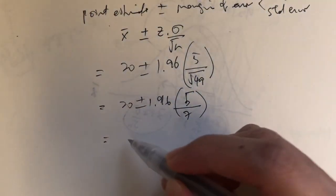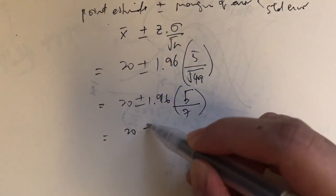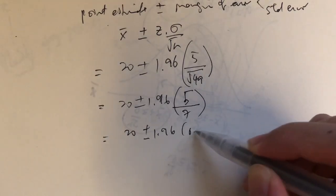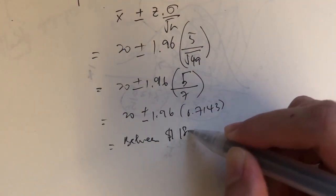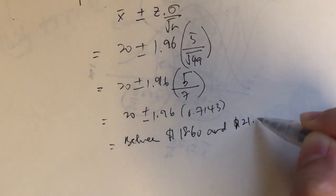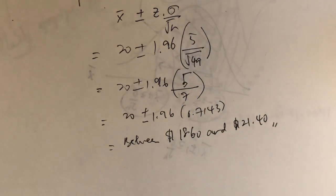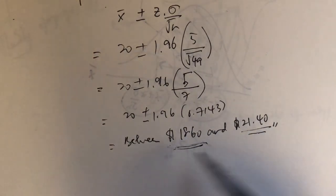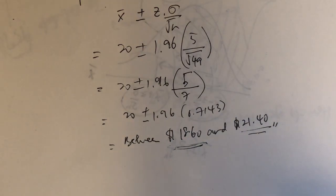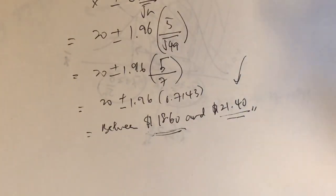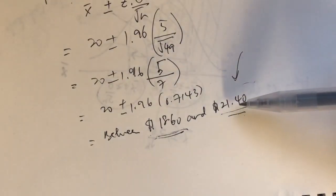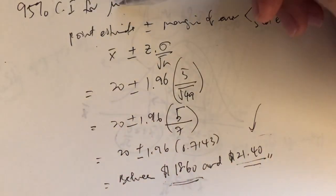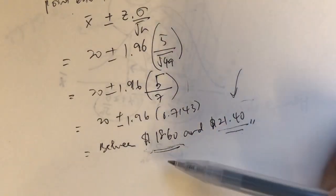The answer is between $18.60 and $21.40. This is how we write the answer for a confidence interval — it has to have two values. You can write it as $18.60 to $21.40. Now they also ask you to interpret the result. Since we are calculating the confidence interval at a 95% confidence level, we can say that we are 95% confident that the true value of mu lies within the interval of $18.60 and $21.40.